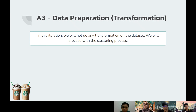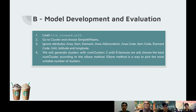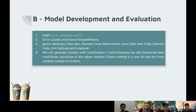For section A3, data preparation or transformation, for this iteration we will not do any transformation on the dataset and will only proceed with the clustering process. We will begin our clustering process in the model development and evaluation section. We load the file that has been cleaned from missing values, named file_clean, then select the cluster tab and use the clustering method simple k-means. We ignore several attributes like area, item, element, area abbreviation, area code, item code, element code, unit, latitude, and longitude. The reason we ignore these is because they don't have meaningful values to use in our clustering process. We are actually going to use attributes that have the values of production.